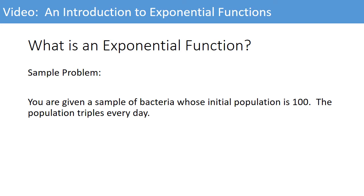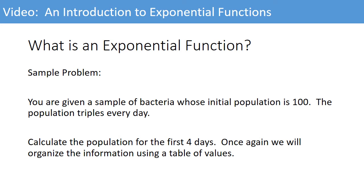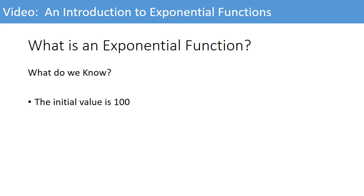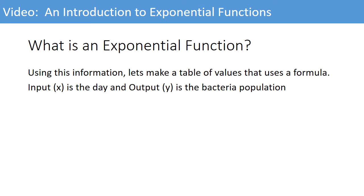Here's the same problem we already are familiar with. You are given a sample of bacteria whose initial population is 100. The population triples every day. Calculate the population for the first four days. Once again, we will organize the information using a table of values. To help us, let's look at what we know. The initial value, or the original number of bacteria, is 100. The bacteria triples every day. Using this information, let's look at the table of values again, but using a formula this time.